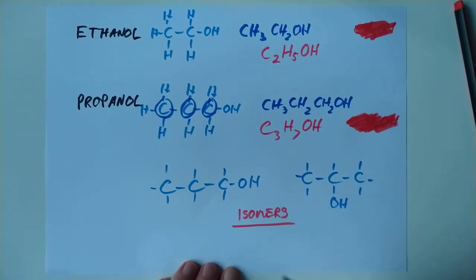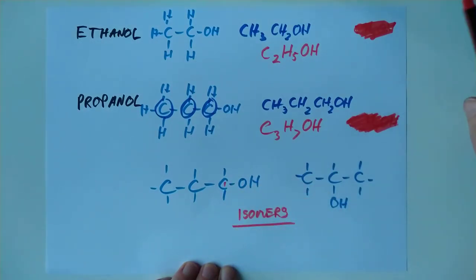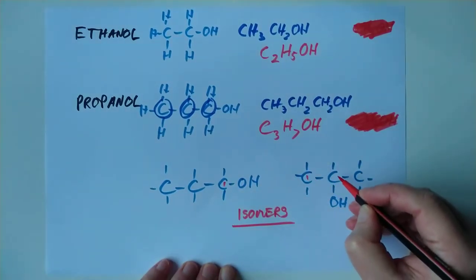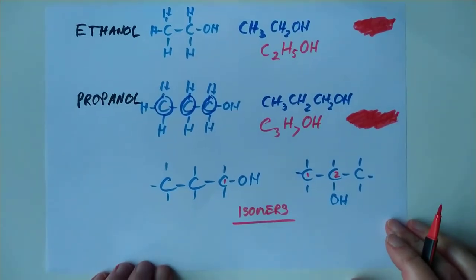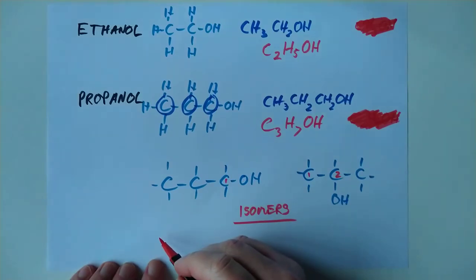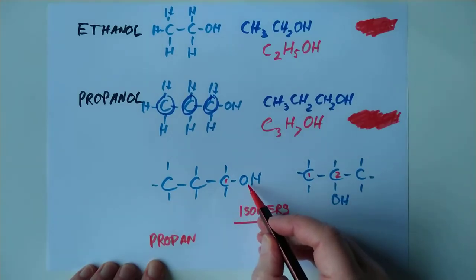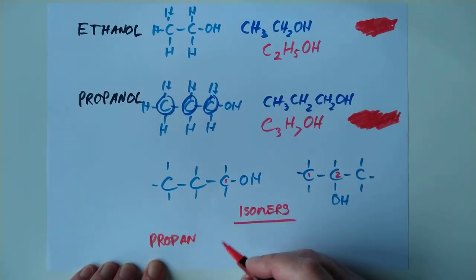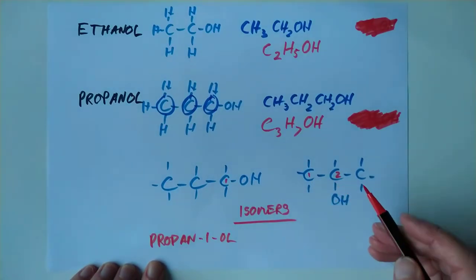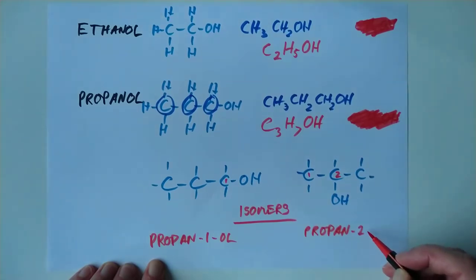So we would number from here, obviously. So one. And this one here, we can number from either end. It's the same thing. So let's number from here, two. Now how do we show the reader where the hydroxyl group is? This is propanol, and then we insert the number just before the ol because it's a member of the alcohol. So this is propan-1-ol. And this is propan-2-ol.